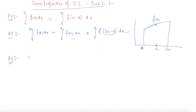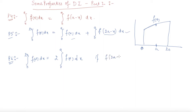Now let us move to property number P6, which states that the integral from 0 to 2a of f(x) dx equals 2 times the integral from 0 to a of f(x) dx, if f(2a minus x) is equal to f(x).